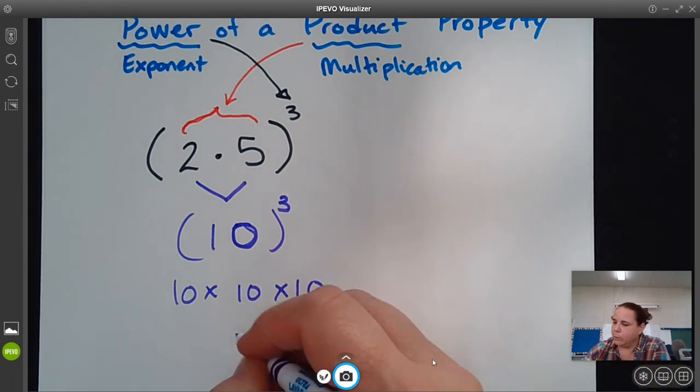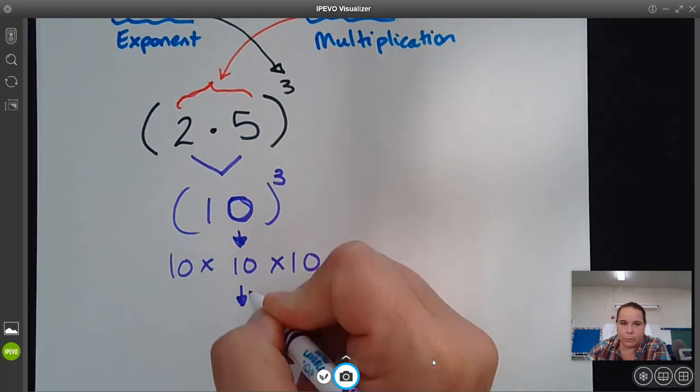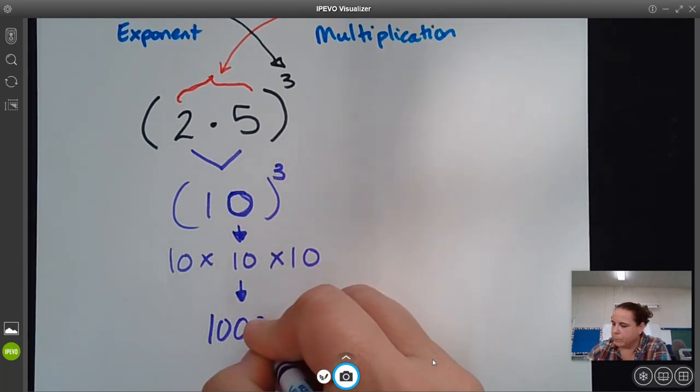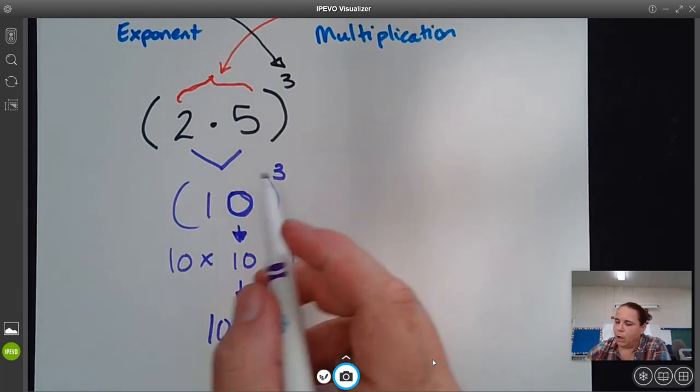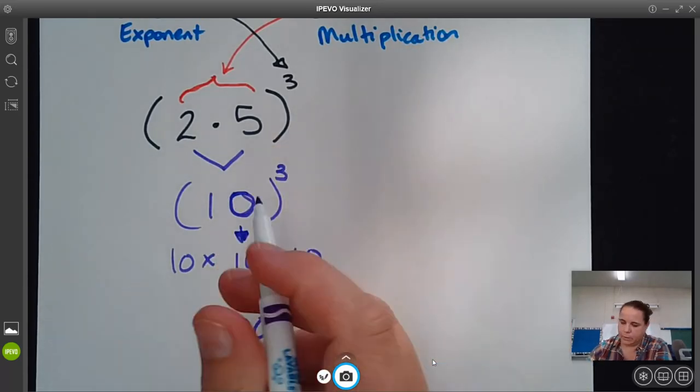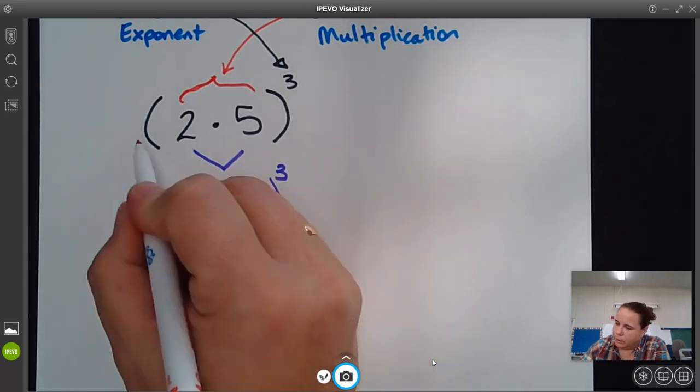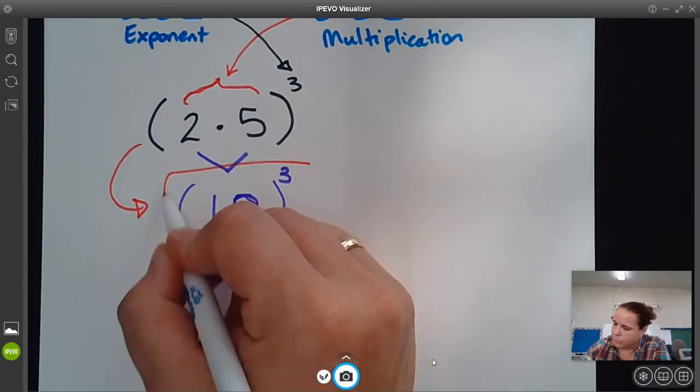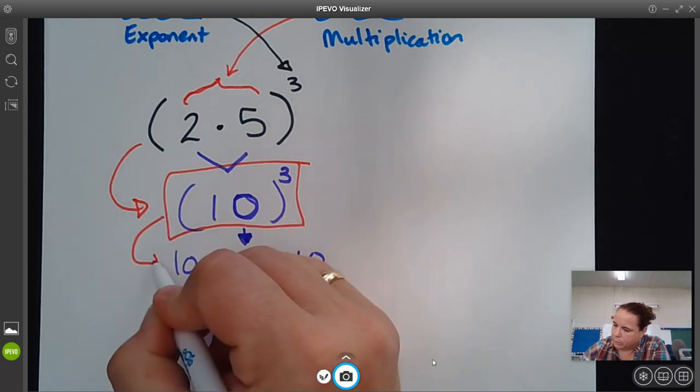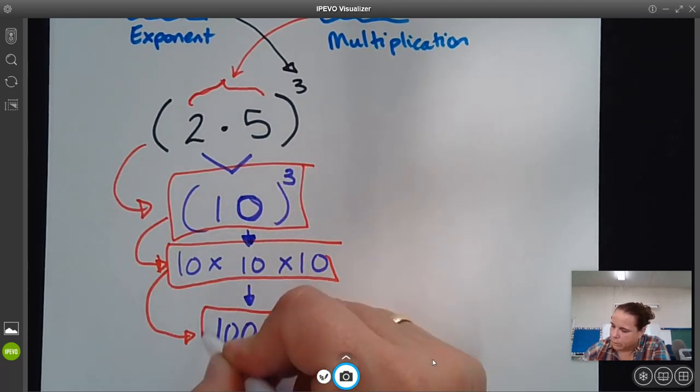And this would be the same as 1,000, right? So all of these are equivalent. So this is equivalent to this, which is equivalent to this, which is equivalent to this.